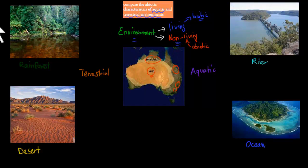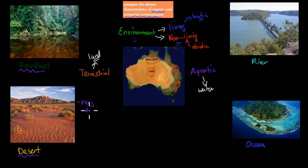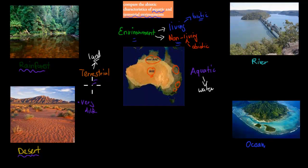There are two different words: terrestrial and aquatic. Terrestrial just means land — so land environments. When it comes to terrestrial environments, we have things like our rainforests and our deserts, which are very different, but they both make up terrestrial environments. There are also shrublands and fringe environments like mangrove areas and swamps. So there's a huge variety of terrestrial environments.